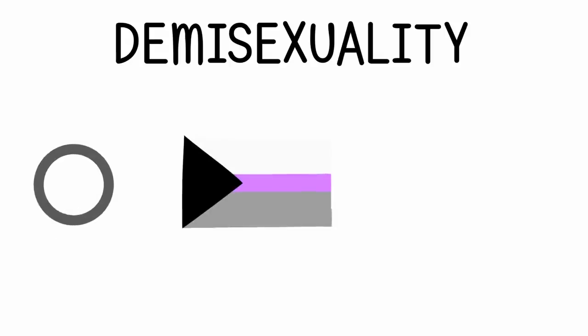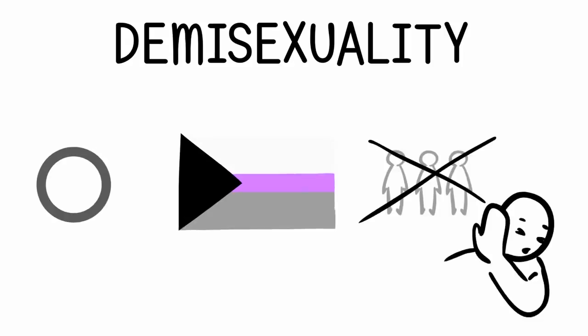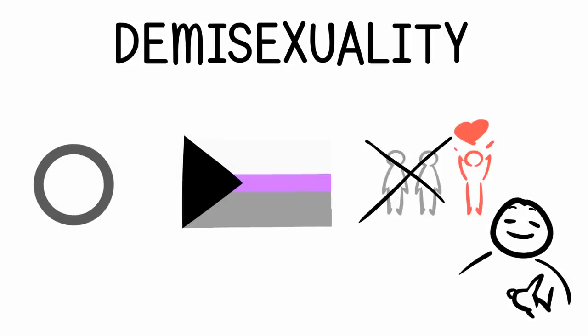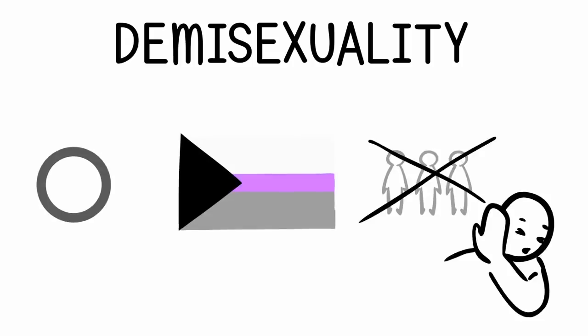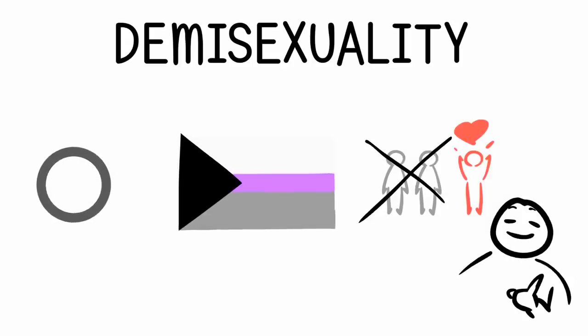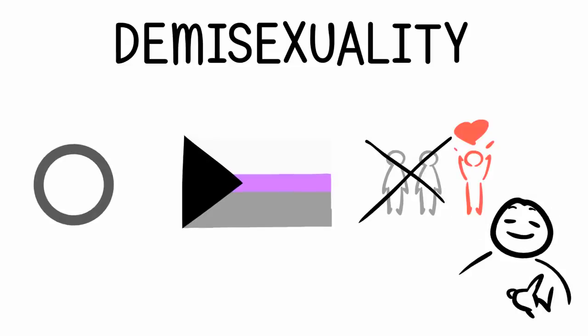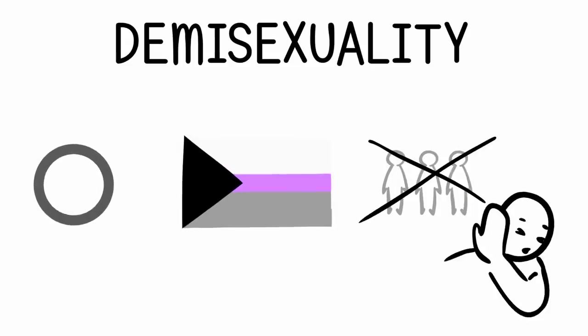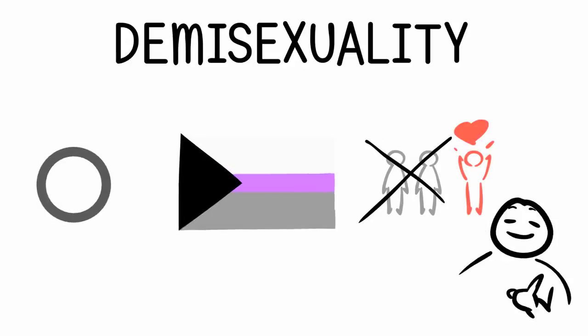8. Demisexuality. Demisexuality can technically fall under the asexual umbrella. People who are demisexual do experience sexual attraction, but only after an emotional connection is created. They wouldn't find a stranger on the street sexually appealing, but after they get to know someone well, the possibility of sexual attraction is there. Demisexuality is considered the halfway point between asexuality and allosexuality — those who experience sexual attraction.